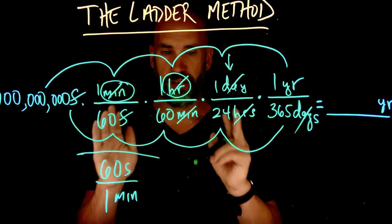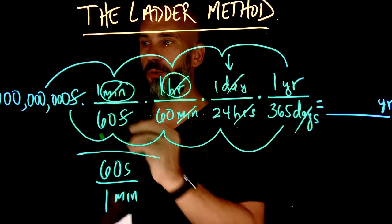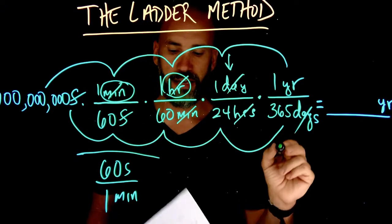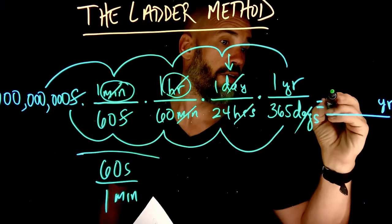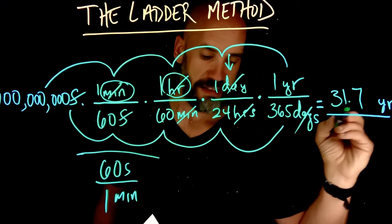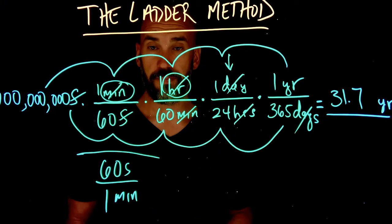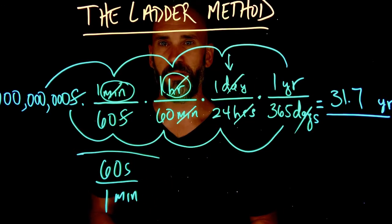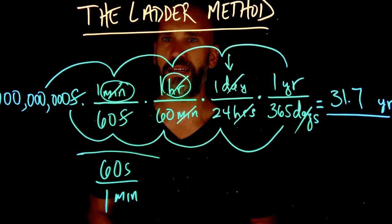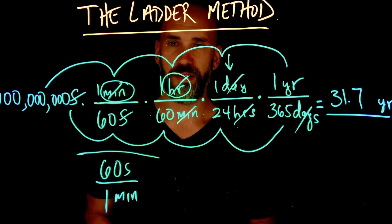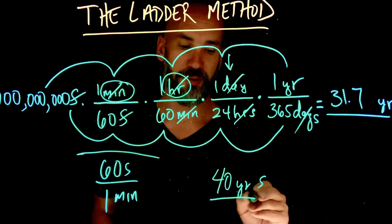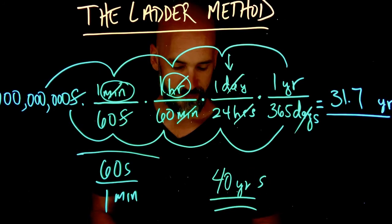Go ahead and do that right now. You want to multiply everything on top and divide by everything on the bottom — and you should get 31.7 years. So a billion seconds is 31.7 years. That begs the question: is Scott a billion seconds old? The sad truth is this summer I just turned 40 years old. So yes, I am.